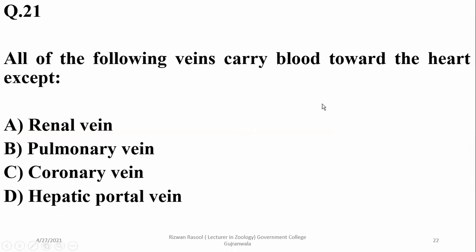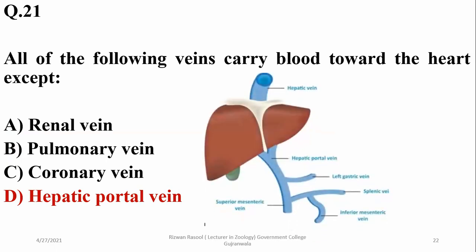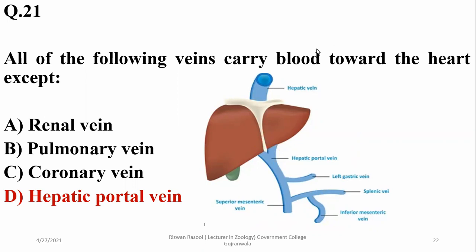All of the following veins carry blood toward the heart except: hepatic portal vein. All portal veins carry blood towards another body organ rather than towards the heart. The right option is hepatic portal vein, which carries blood from the digestive tract towards the liver.